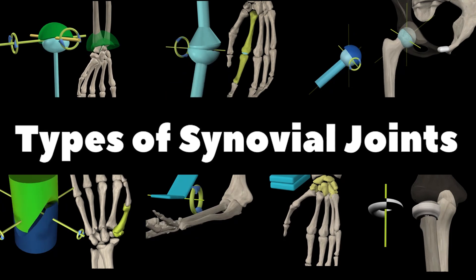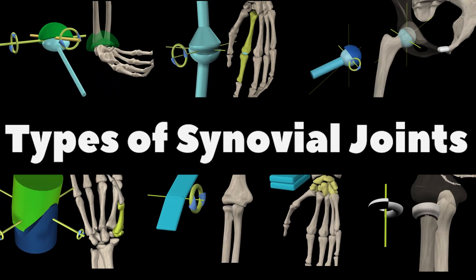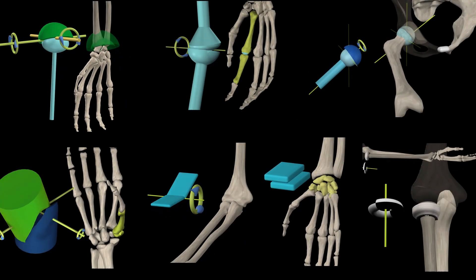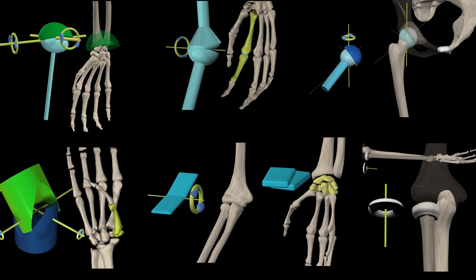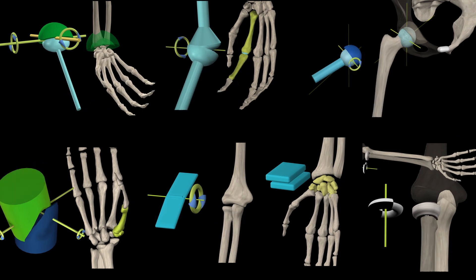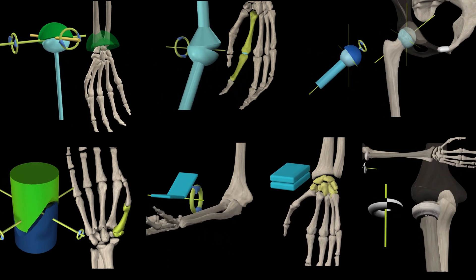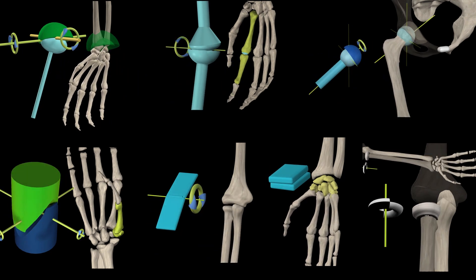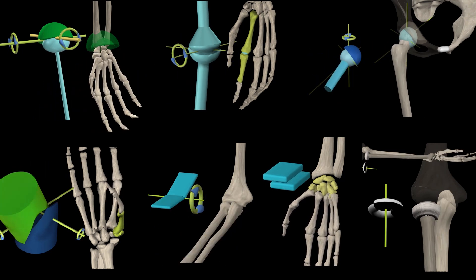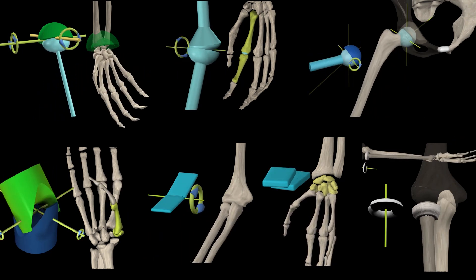Types of synovial joints. Synovial joints are the freely mobile joints in which the articulating surfaces have no direct contact with each other.